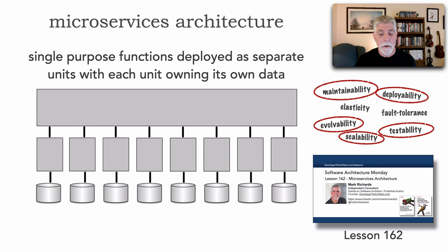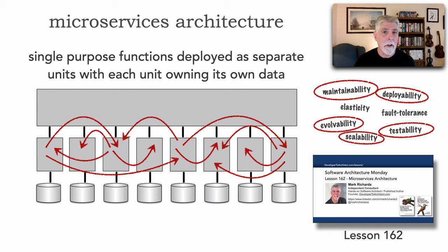So let's go back to that epic failure with microservices, because this was one of the questions posted on my website: what was the solution? We chose microservices, whose shape is single-purpose functions deployed as separate units of software, each owning its own data, with high levels of maintainability, deployability, testability, elasticity, and evolvability. Those superpowers really do match the shape of our problem. But the shape of an architecture is not entirely just about its characteristics.